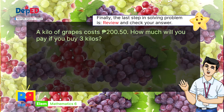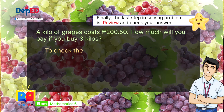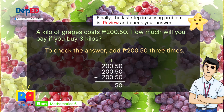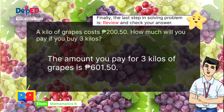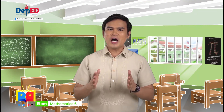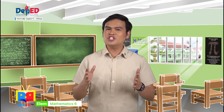Finally, the last step is R: review and check your answer. To check the answer, add 200 pesos and 50 cents 3 times. We arrive with the same answer of 601 pesos and 50 cents. That means the amount you pay for 3 kilos of grapes is 601 pesos and 50 cents. You got it, Mateo. You absolutely followed the steps in solving word problems.